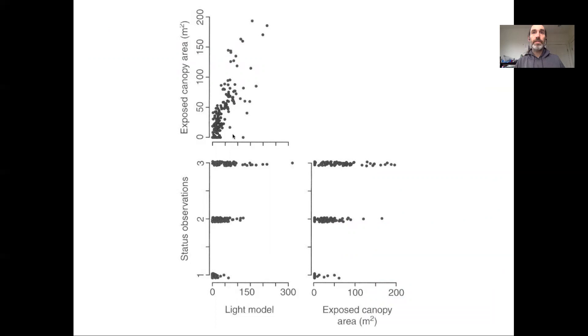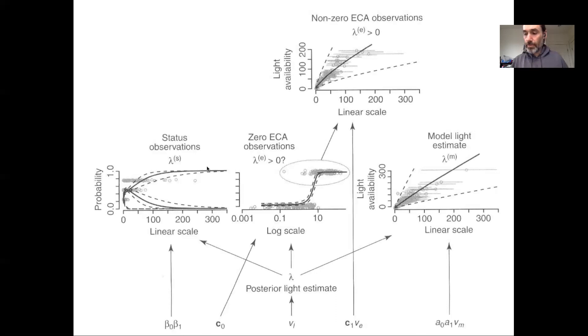And this is now showing our three sources of information: our light model, our canopy status observations, and our exposed canopy area. These are related to—for example, the mechanistic model and the remote sensing are correlated with each other but not the same. Canopy status shows relationship with the light model and with exposed canopy area, though much rougher because it is a categorical response.